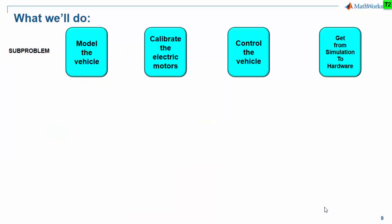As is the way with solving any big problem, we break it down into smaller problems. We'll look at the sub-problem of creating a model of the quadcopter vehicle, then how to incorporate empirical measurement data to calibrate our electric actuators, then how to design control systems to make the vehicle do what we want, and finally — once everything works in simulation — how to implement those ideas onto a piece of silicon to see them running in real life.